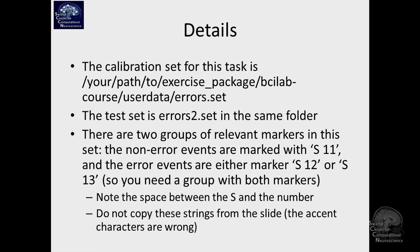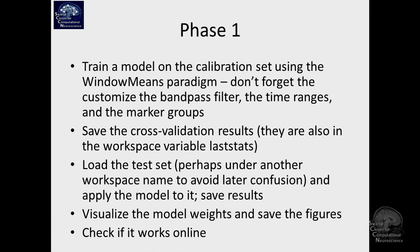There is one class which has just one marker, and that is S11 — that's no errors. And there are two types of errors, indicated with markers S12 and S13. So you basically need to declare a group which includes both markers, using a grouping track again. You can also run the same exercise with the data that I had, but then there's less innovation and you'll see the same plots you already saw before.